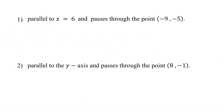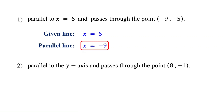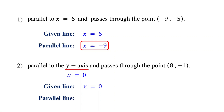For the first practice problem, the given line is x equals 6, which is a vertical line. A parallel line is also vertical, with the equation x equals the x-coordinate of the given point. In the second example, the line is parallel to the y-axis, which corresponds to x equals 0. So the equation of the given line is x equals 0, which is a vertical line. A parallel line is also vertical, with the equation x equals the x-coordinate of the given point.